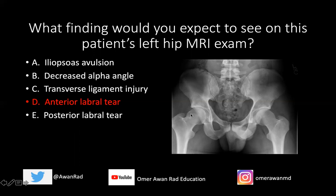They also have that on the right side as well. There's lack of offset — normally you have a nice concave offset at the femoral head and neck junction, but instead we have this osseous protuberance here suggesting CAM type FAI.